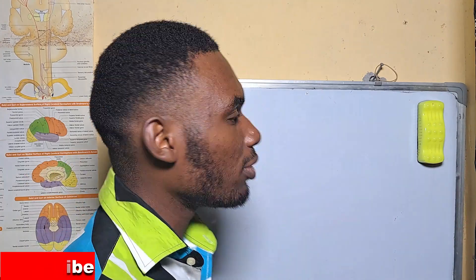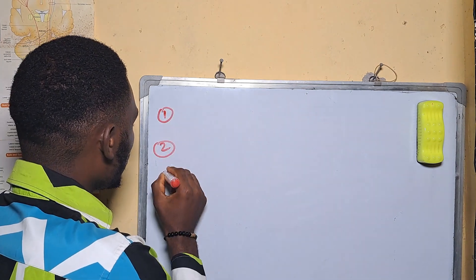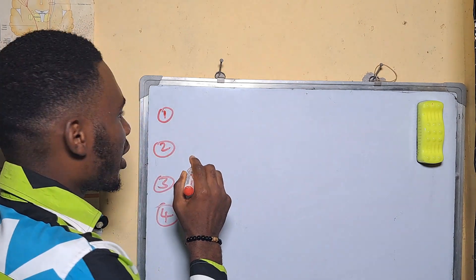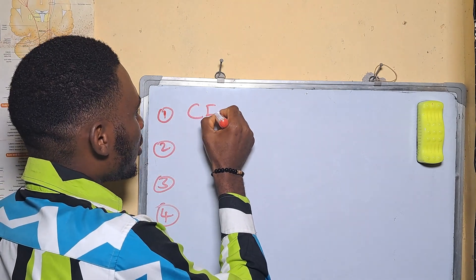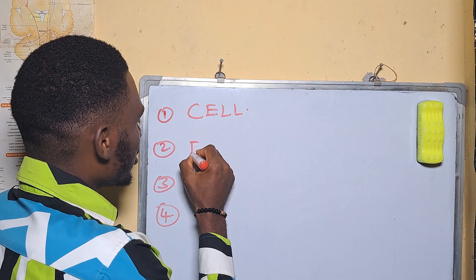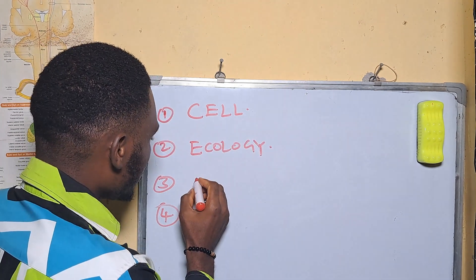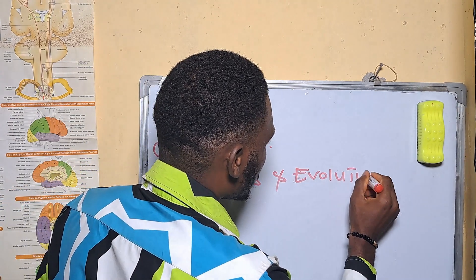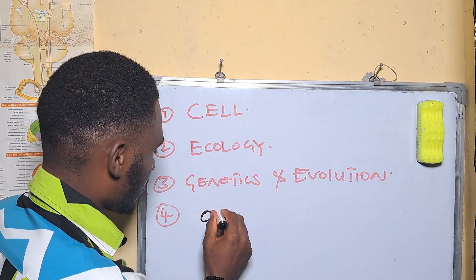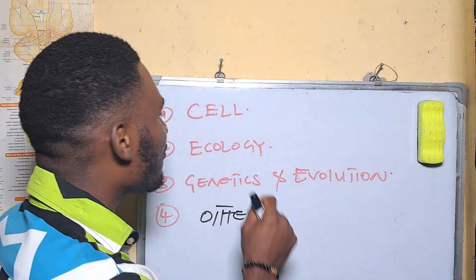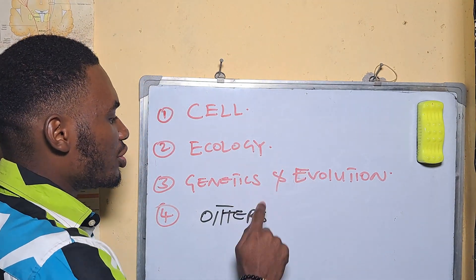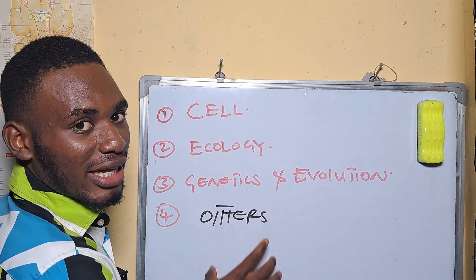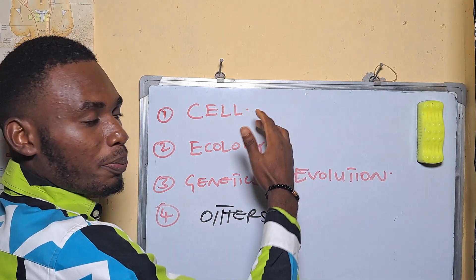So make sure you like this video, share with your friends, and also subscribe to this channel. So guys, I categorize these topics into 4. First among them is cell. Second is ecology. Thirdly is genetics and evolution. And lastly is others. So we have 4 categories of topics: cell, ecology, genetics and evolution, and others. We will be discussing each of the topics individually.